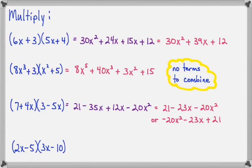2X times 3X is 6X squared. Outer times outer says 2X times negative 10, so that's minus 20X.